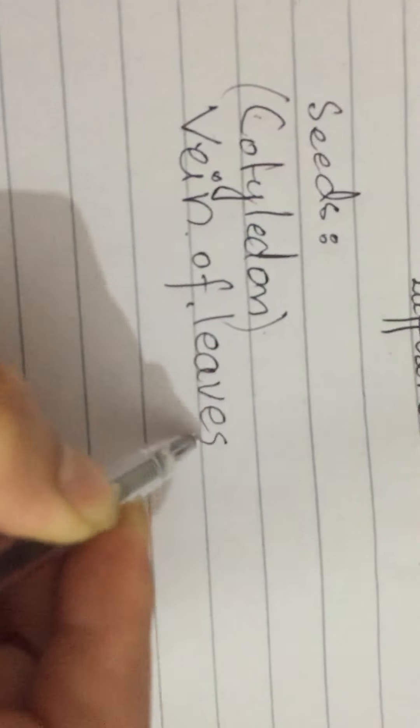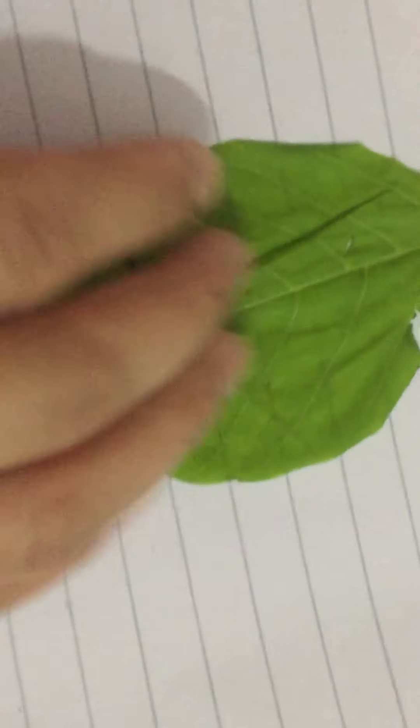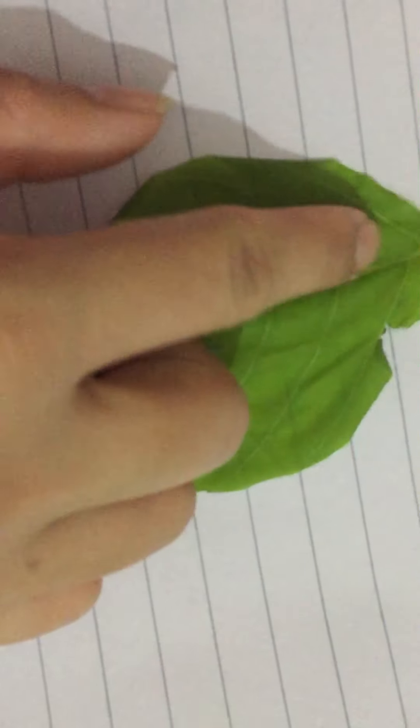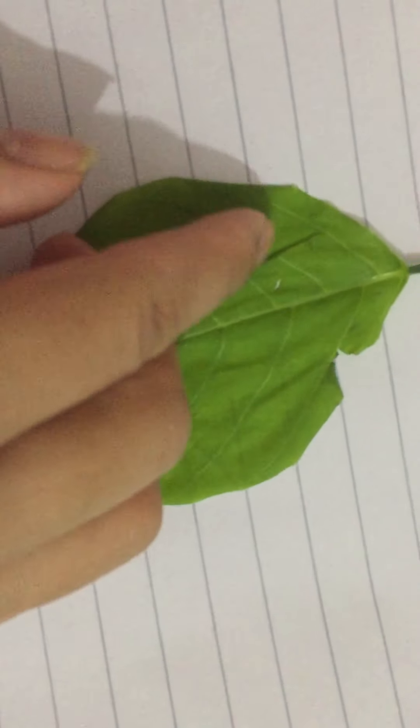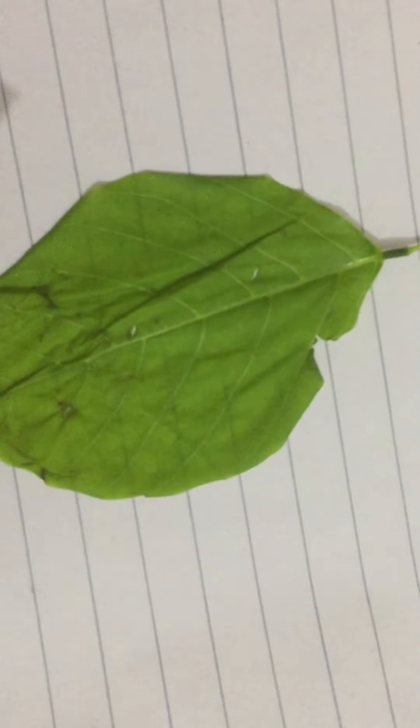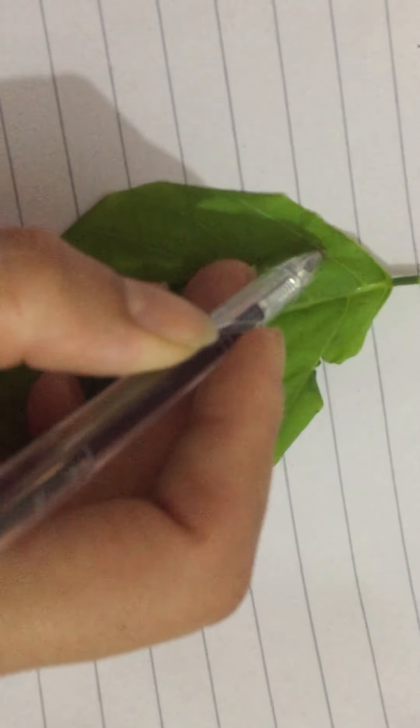Third, we have veins of leaves. See the leaves. This is how you look at it. There are lines made properly. These lines which we have are called veins.